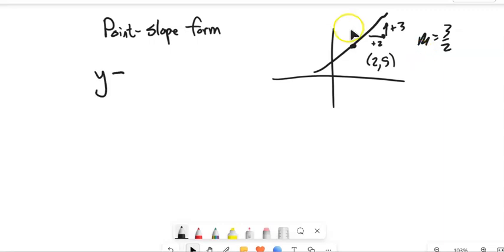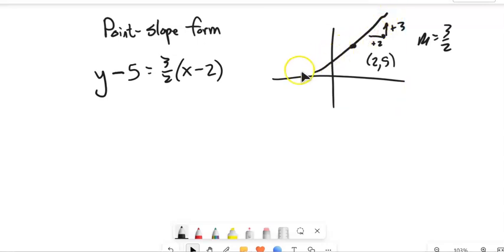It's y minus the y part of the point, so that point's 5, so y minus 5 equals the slope, 3 halves, times x minus the x part of the point. And this, if I graph this, would give me that straight line.